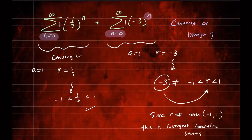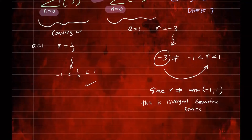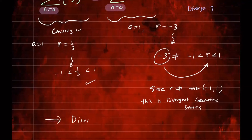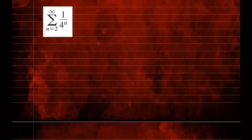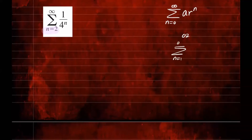So the conclusion is that this entire series diverges. Now let's look at a series that starts at n equals 2, not 0 or 1, so we have to be careful. It doesn't match either of our two standard forms, so we need to do some index shifting. Let's write out some of the terms.